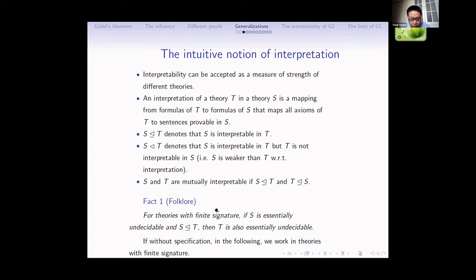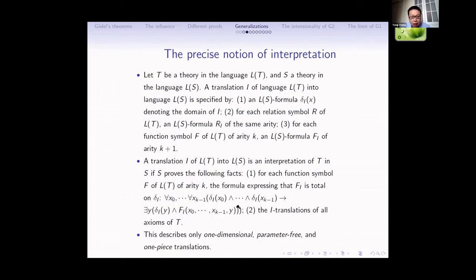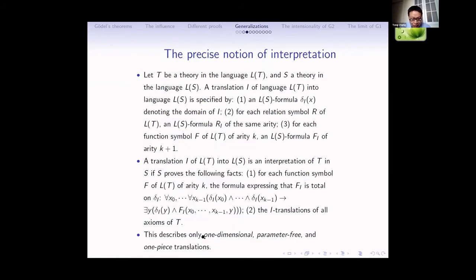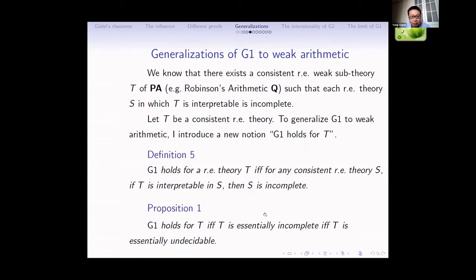An important fact: for theories with finite signature, if S is essentially undecidable and S is interpretable in T, then T is also essentially undecidable. In the following, I will work with theories with finite signature. Note that this important fact does not hold for infinite signatures.